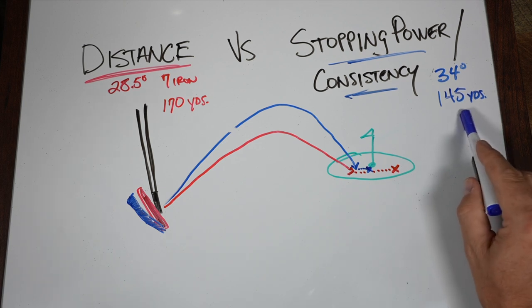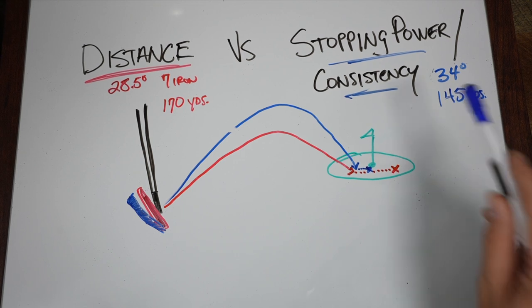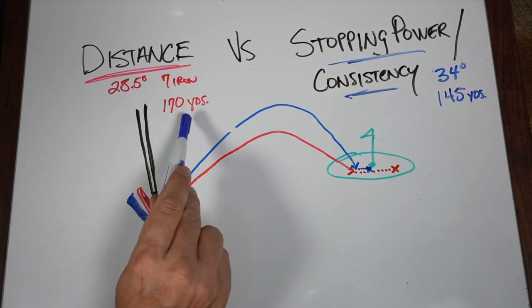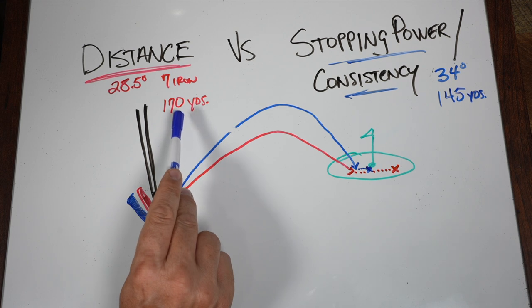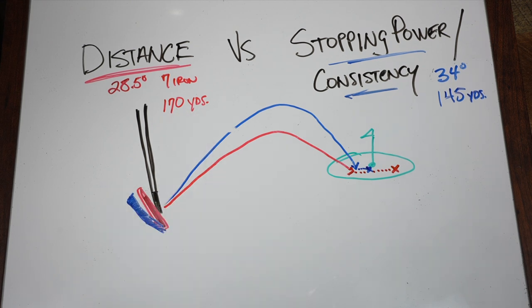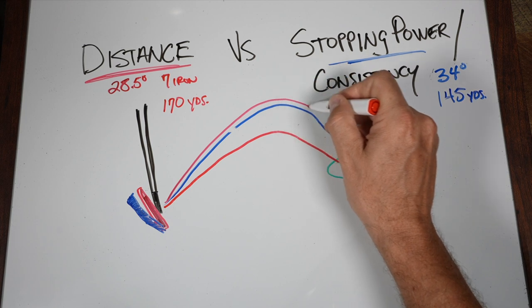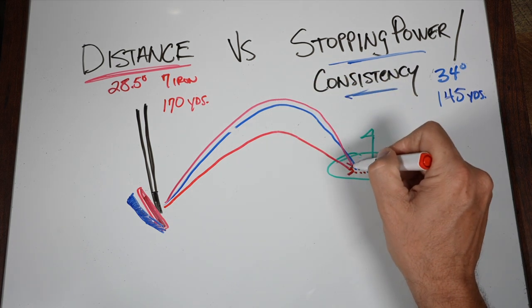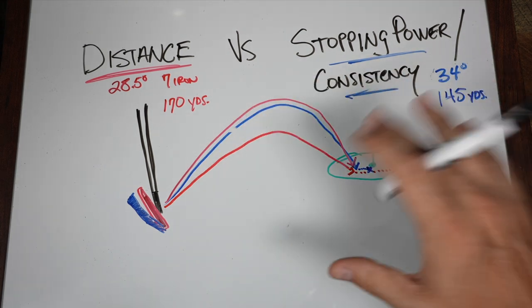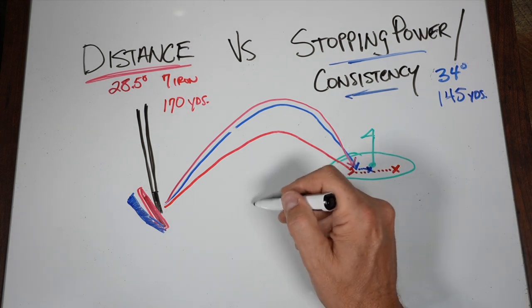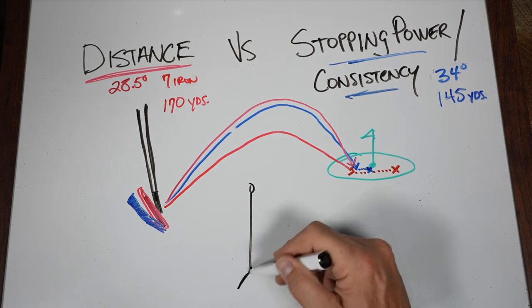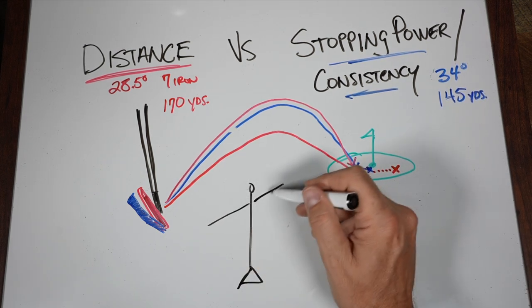But as you can see, the trajectory is going to change. At 145 yards, you're hitting a 7-iron with a club like this. At 145 yards, you're probably hitting an 8 or 9-iron with a club like this. So that all plays into things because you may be able to find a similar trajectory with that 9-iron now, but you still will lose stopping power.